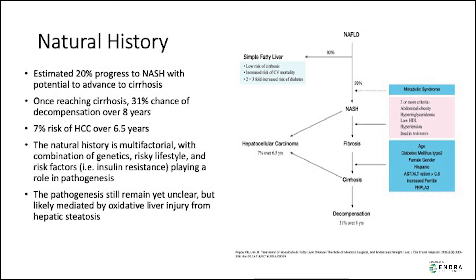The natural history of non-alcoholic fatty liver disease is that an individual develops obesity, then develops non-alcoholic fatty liver disease with fat deposition in the liver. This can be characterized into two forms: simple fatty liver, also known as non-alcoholic fatty liver or simple steatosis. In this cohort, which accounts for 80% of patients, there's a low risk of progression to advanced fibrosis and cirrhosis. However, they still have an increased cardiovascular mortality rate and a two- to three-fold increased risk of diabetes.